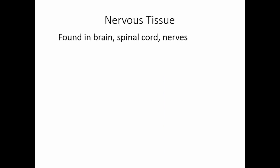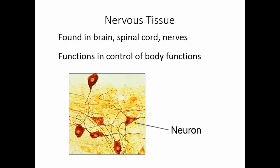The fourth type of tissue is nervous tissue, found in the brain, the spinal cord, and the nerves. It functions in controlling the body. Neurons are the cells that make up nervous tissue. They tend to have long processes that allow them to connect with other cells in the body and communicate with them.